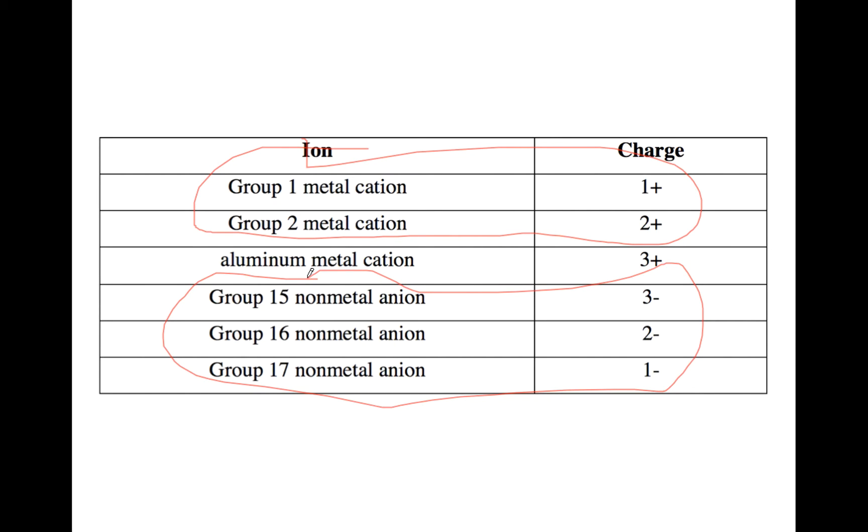Group 15 is minus 3, or 3 minus, group 16 is 2 minus, group 17 is 1 minus, and the aluminum metal cation is always plus 3.